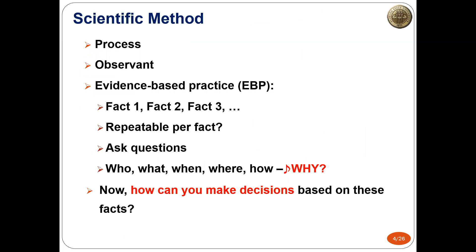Scientific method is about a process of evaluating things and producing a decision. It requires you to be observant — you have to look around and see what's going on. As you look around, you become inquisitive and ask questions. Questions we often ask are: who, what, when, where, and how.